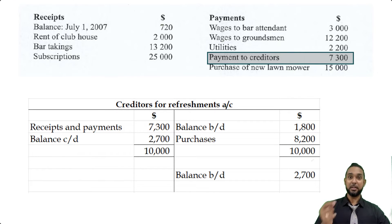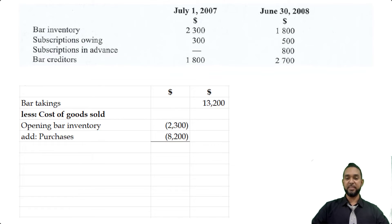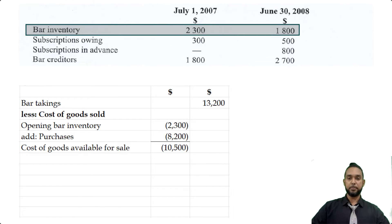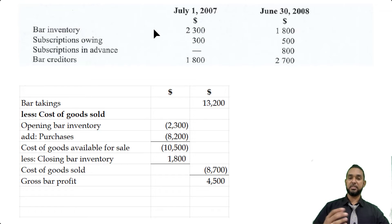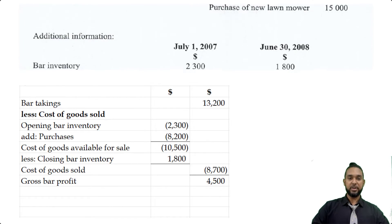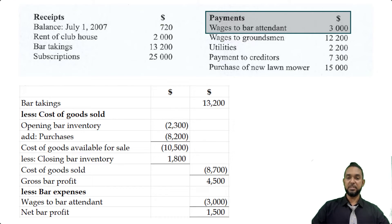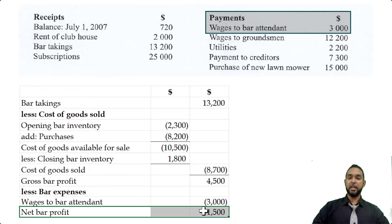Back in the bar trading account, we plug in purchases of $8,200 and add it to opening inventory to get cost of goods available for sale. Subtracting closing inventory of $1,800 gives us cost of goods sold of $8,700 and a gross bar profit of $4,500. Even though it's called a bar trading account, we include all bar-related items, so we also subtract wages to bar attendant of $3,000. That gives us a net bar profit of $1,500, which we'll use in the income and expenditure account.